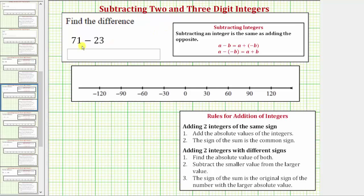We're asked to find the difference, and we have 71 minus 23. Because 23 is less than 71, we can go ahead and subtract like we normally do by writing the subtraction problem vertically and lining up the corresponding place values. So we'd have 71 minus 23.